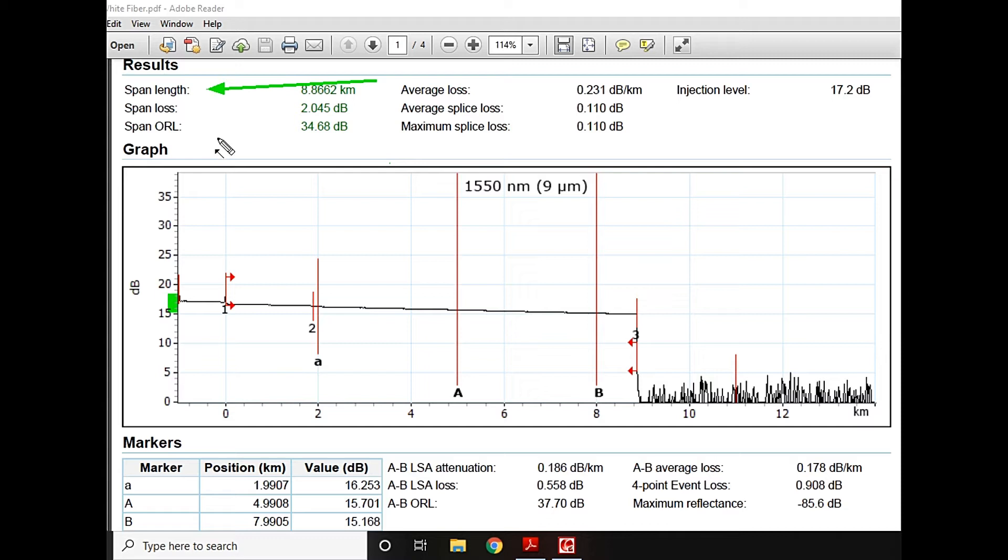If you come down, this is the span loss. The span loss is actually the total loss in your link. This is the average loss, this is the average splice loss, this one is the maximum splice loss.